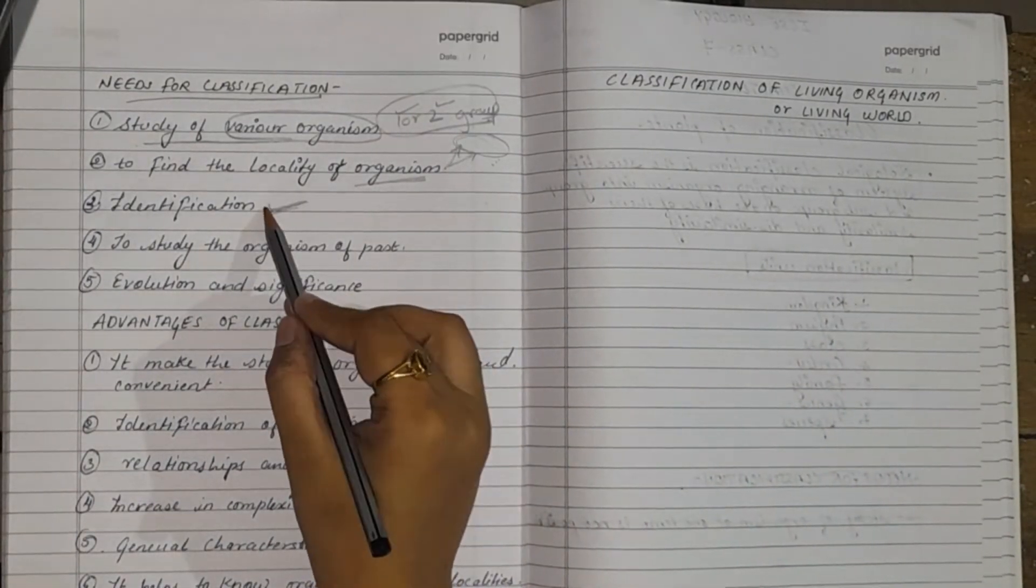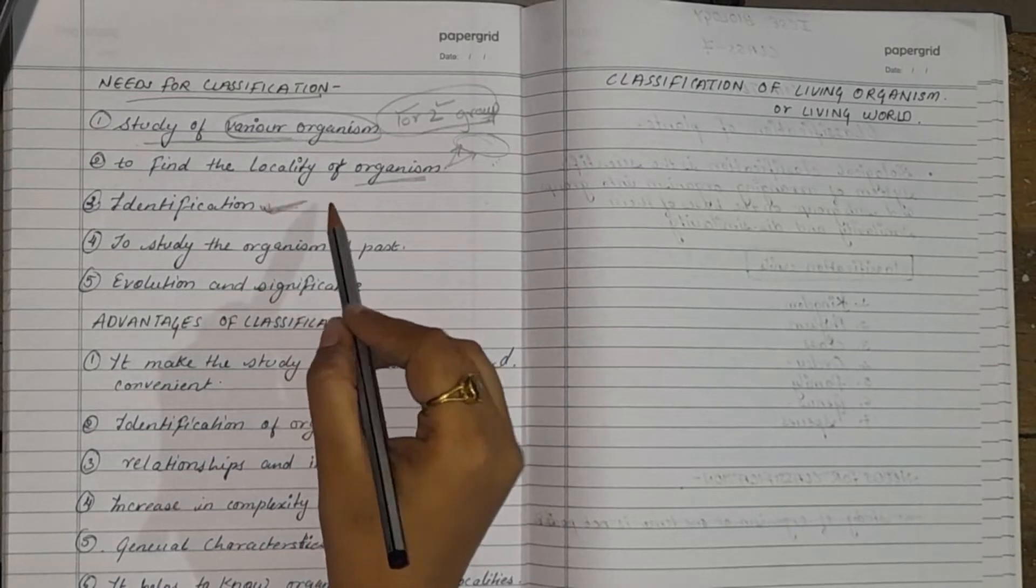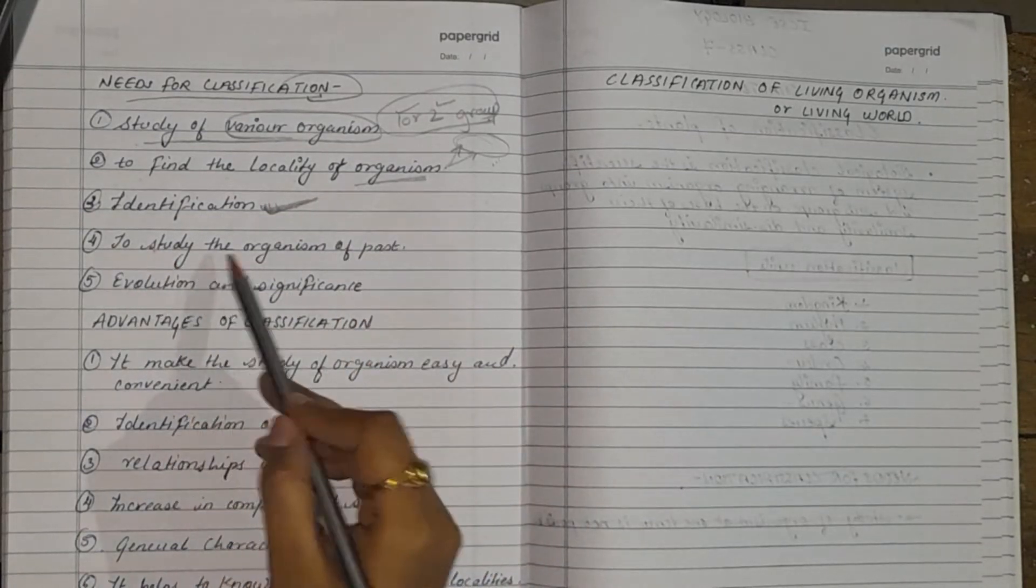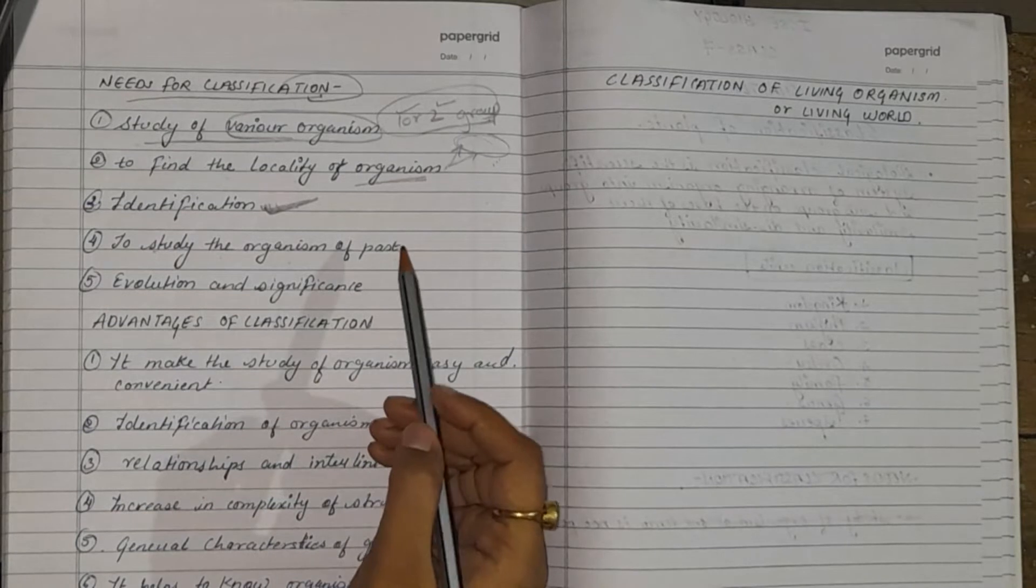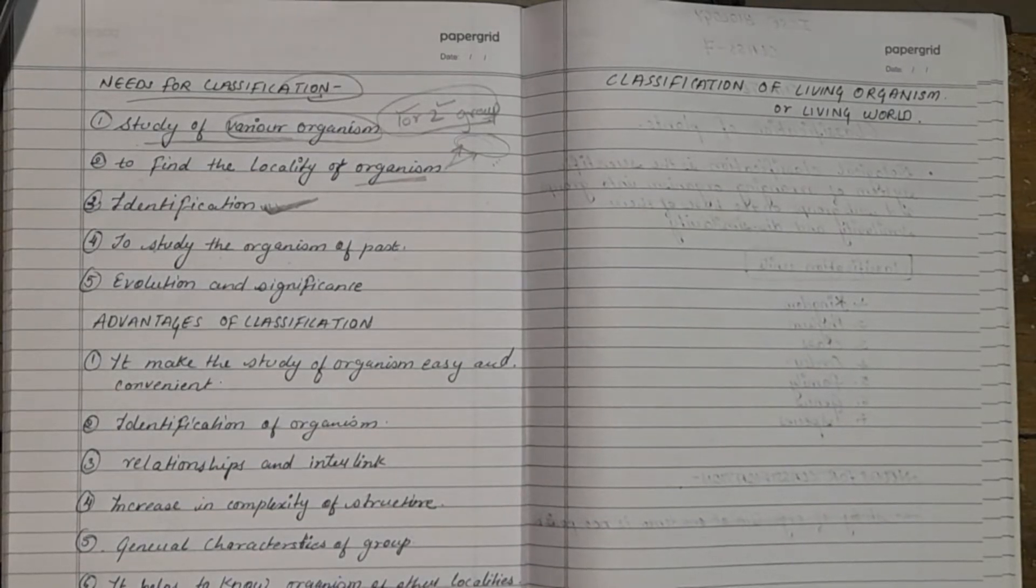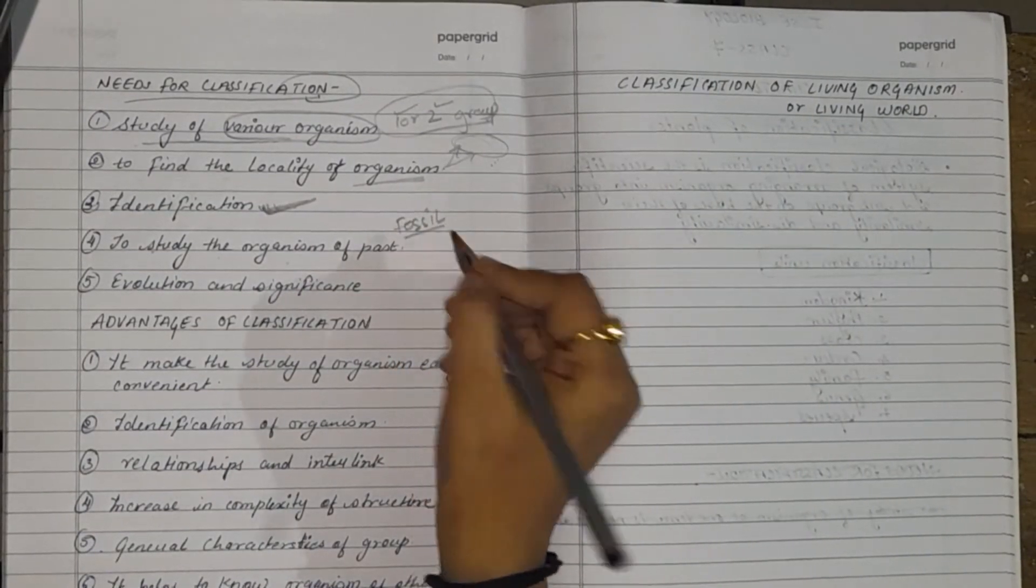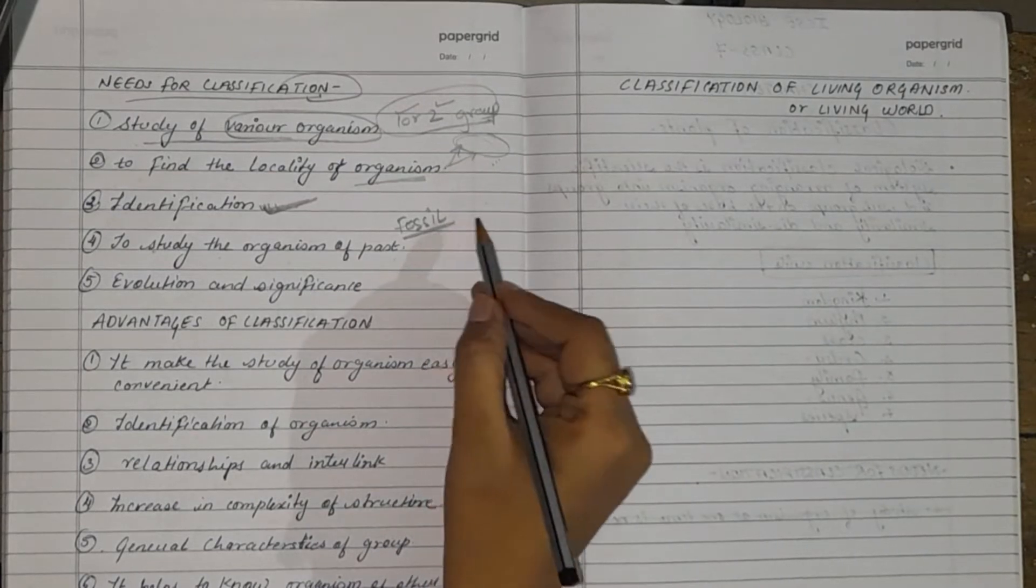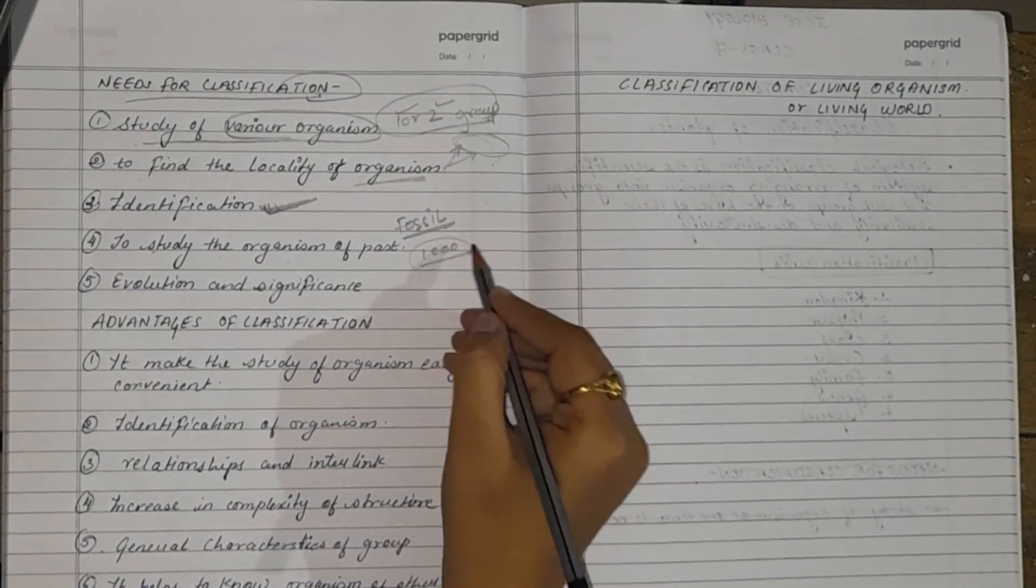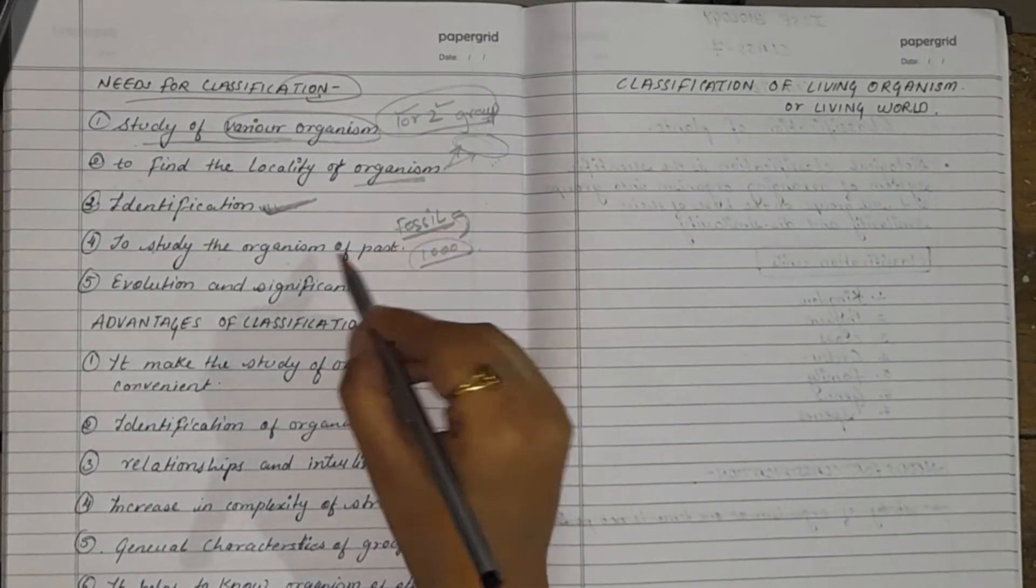The third point is identification. Without a proper systematic classification, organism could not be identified. So classification is needed for the identification of the organism to study the organisms of the past. Classification not only gives the explanation about the organisms which are present now, but it also gives us the information about the fossils. What are fossils? Fossils are the animals or plants which lived thousand years ago or thousand years back. The animals and the plants which were found, they are not now. They are considered to be the fossils or the organisms of past.